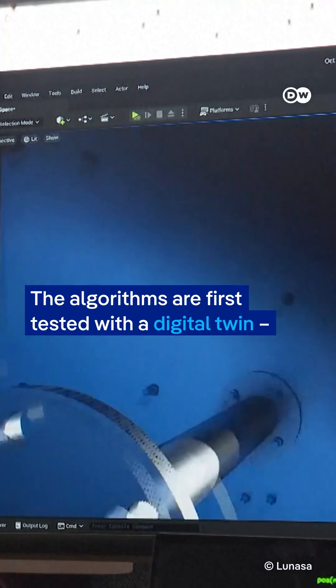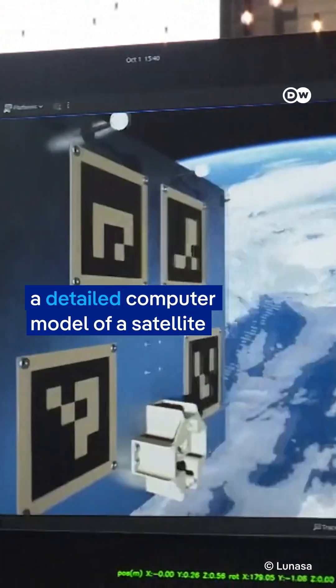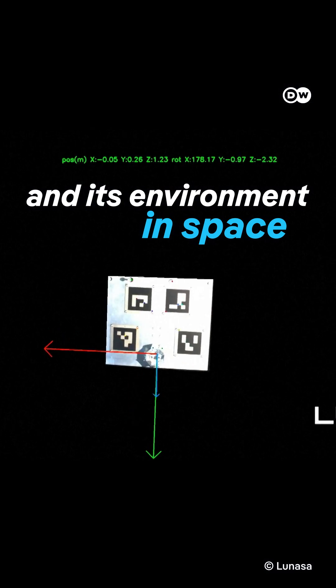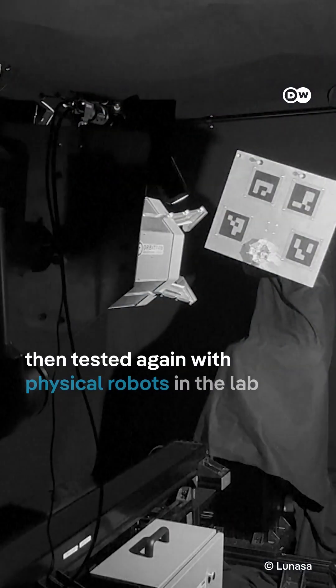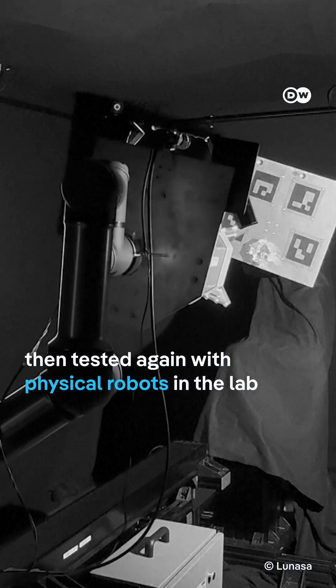The algorithms are first tested with a digital twin, a detailed computer model of a satellite and its environment in space. Each maneuver is rehearsed in simulation, then tested again with physical robots in the lab.